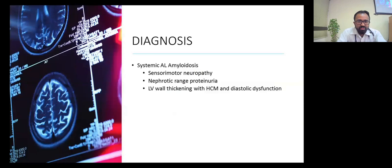Our final diagnosis was systemic AL amyloidosis with sensory motor neuropathy, nephrotic range proteinuria, and LV wall thickening with diastolic dysfunction.